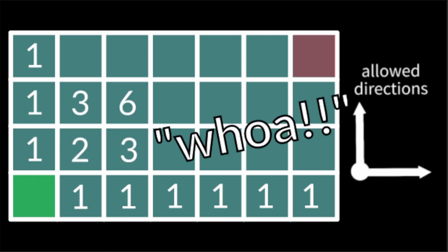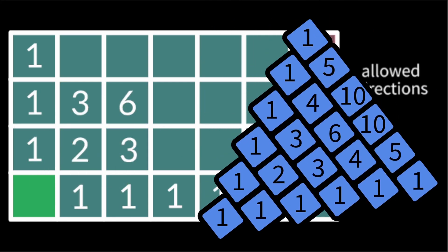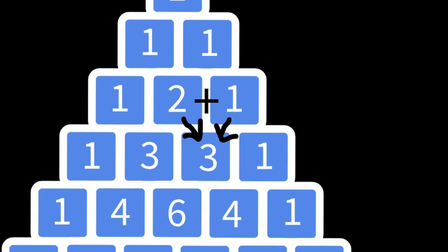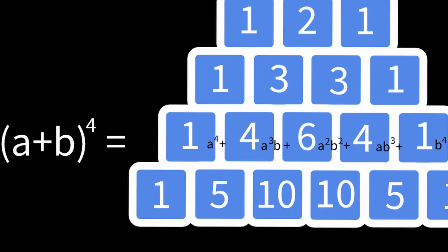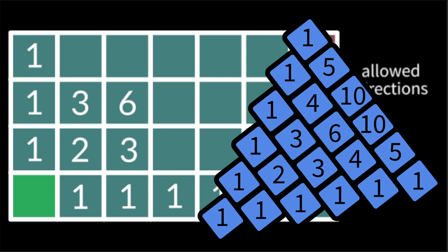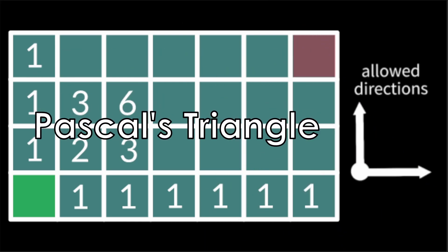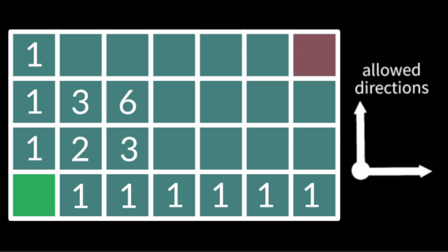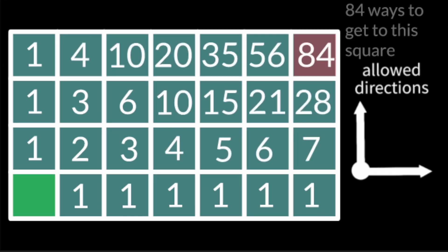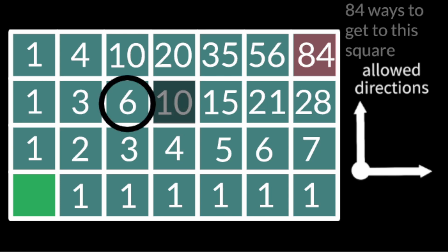Does this look familiar? It's the exact same as this triangle — the one where every number is the sum of the two numbers above, that also defines the coefficients of expanded and exponentiated binomials. It has a few different names, but in the English-speaking world it's usually called Pascal's Triangle, and we can fill out every single square by simply following Pascal's Triangle. The only ways to get to this square are to be here and go right, or here and go up, so we will be adding all of the ways to get to each of those squares. This happens for every square.